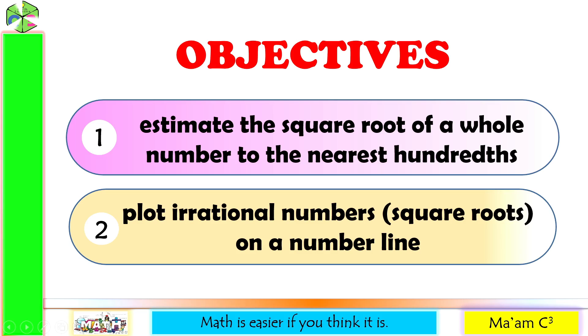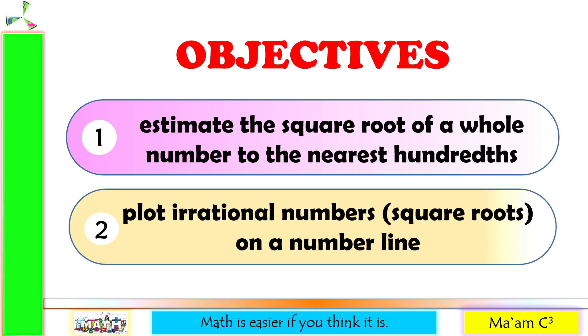Our objectives in this lesson are the following: estimate the square root of a whole number to the nearest hundredths, and plot irrational numbers on a number line.